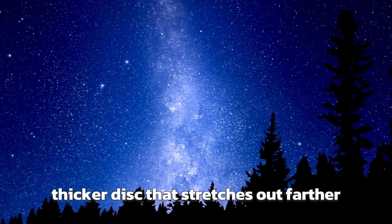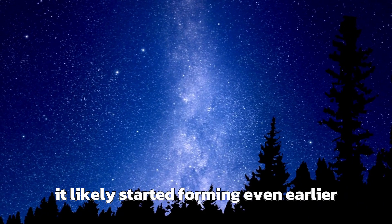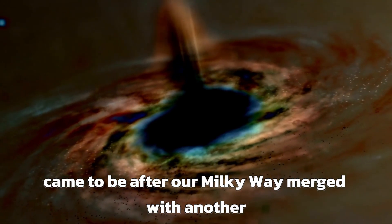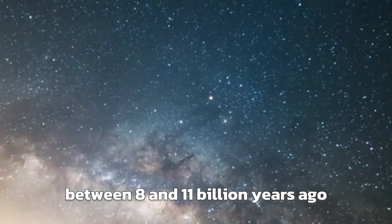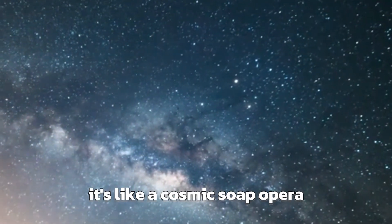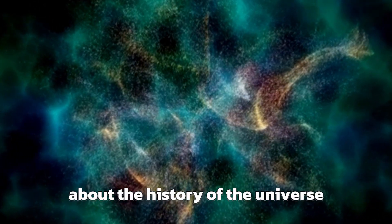Then there's the older, thicker disk that stretches out farther. It likely started forming even earlier. Another part of our galaxy called the inner halo came to be after our Milky Way merged with another smaller galaxy known as Gaia-Enceladus between 8 and 11 billion years ago. It's like a cosmic soap opera unfolding on a grand scale, and it's changing the way we think about the history of the universe.